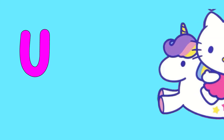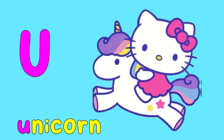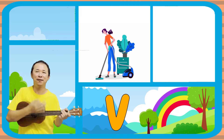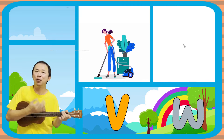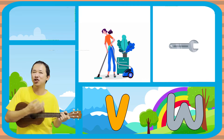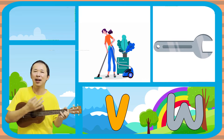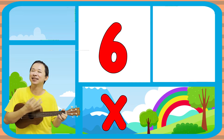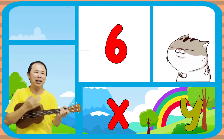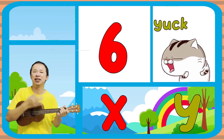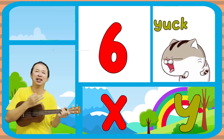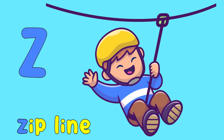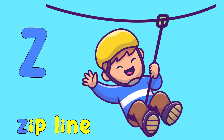U is for Unicorn, u. V is for Vacuum, v. W is for Wrench, w. X as in Six, x. Y is for Yank, y-y-y-y. Z is for Zip Line, z. Zip Line, z, z, z. Thank you.